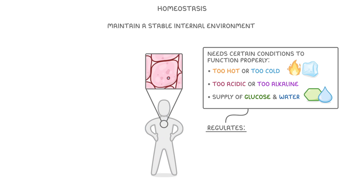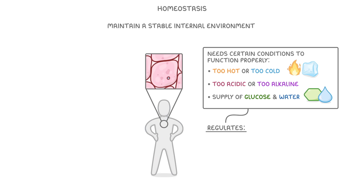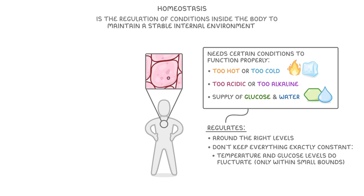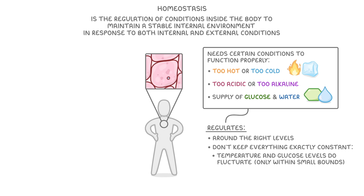To achieve all of this, our body regulates everything and makes sure that everything is kept around the right levels. That said, we don't keep everything exactly constant — for example, our temperature and glucose levels do fluctuate, but only within small bounds. As for a definition, we can say that homeostasis is the regulation of conditions inside the body to maintain a stable internal environment, in response to changes in both internal and external conditions.